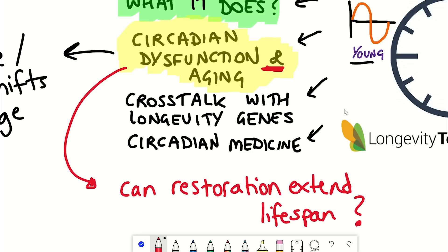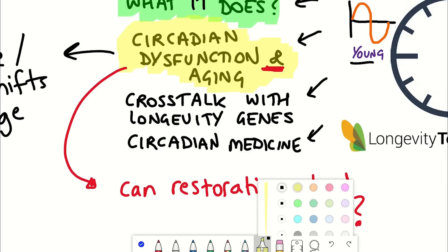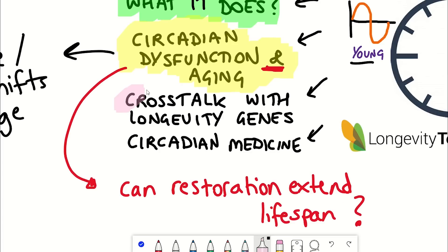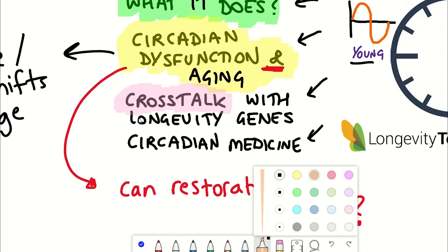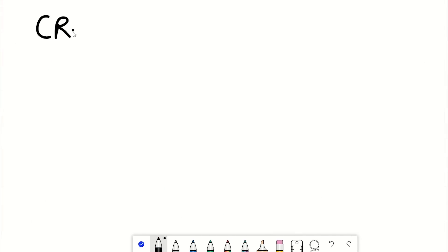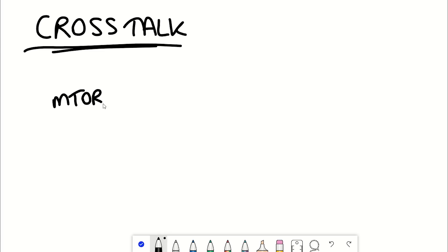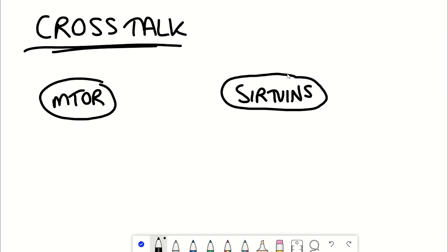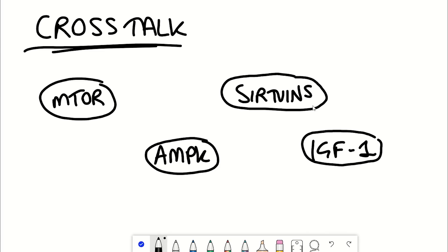How exactly aging perturbs the function of internal clocks remains an open question, but one area of insight comes from the crosstalk between the clock components and the so-called longevity signaling pathways. These signaling pathways include perhaps familiar factors such as mTOR, sirtuins, AMP kinase, and insulin signaling.